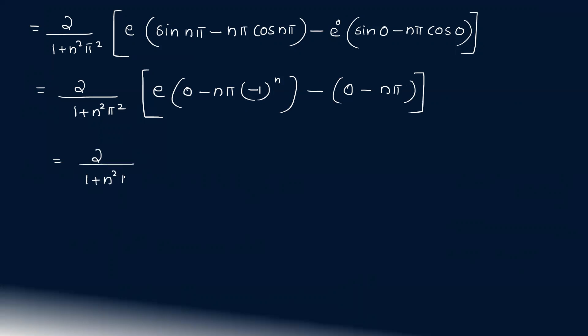That is equal to 2/(1 + n²π²) into [nπ minus e·nπ(-1)^n minus (0 - nπ)]. nπ value is equal to 2nπ/(1 + n²π²) into [1 - e(-1)^n].